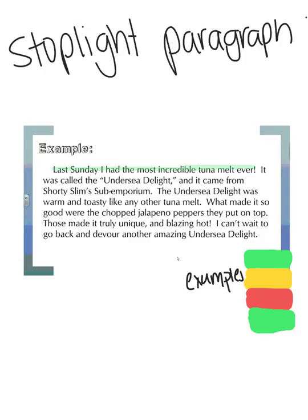Remember, the examples are about your topic sentence. Our next sentence is: 'It was called the Undersea Delight and it came from Shorty Slim's Sub Emporium.' So I'm going to highlight that next sentence yellow.